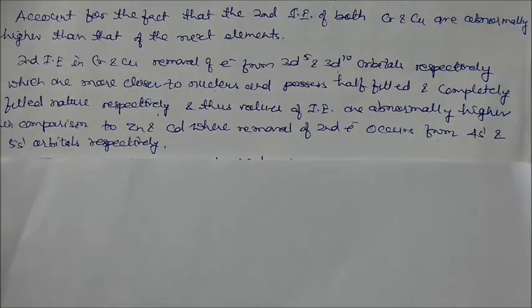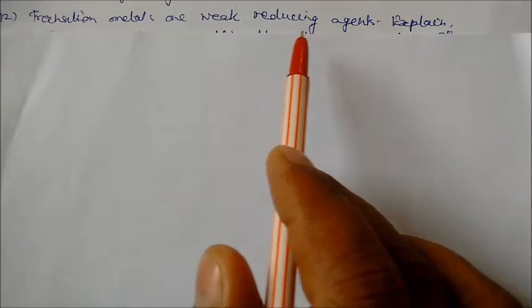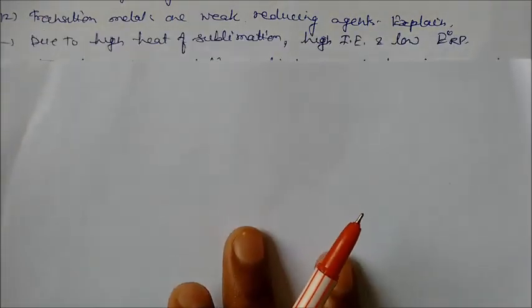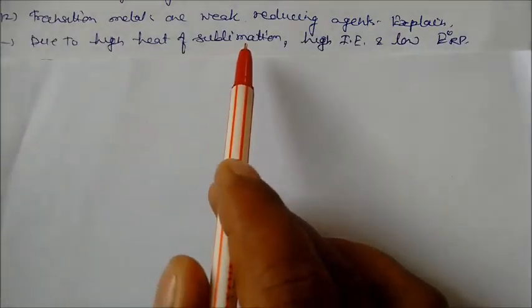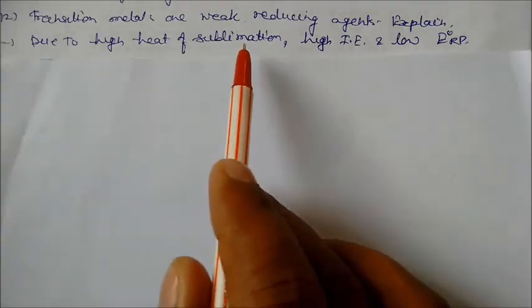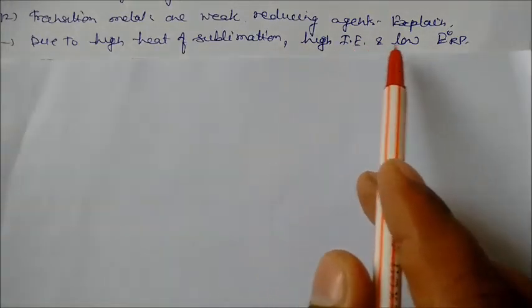Transition metals are weak reducing agents. Explain. Because they have a high heat of sublimation, high heat of salvation, high ionization energy and low reduction potential.